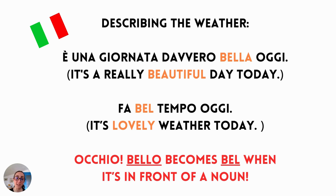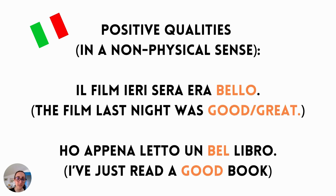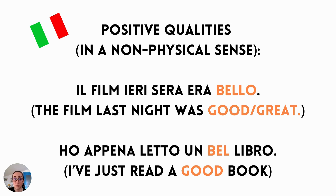You can also use bello to describe the weather. 'Fa bel tempo oggi' — it's lovely weather today. Pay attention: bello becomes 'bel' when it's in front of a noun. So it's not 'bello tempo', it's 'bel tempo.' If you had it the other way around, you would say 'il tempo è bello oggi.' Then for positive qualities in a non-physical sense: 'il film ieri sera era bello' — the film last night was good. 'Ho appena letto un bel libro' — I've just read a good book. Things like films or books can use bello to mean good or great.